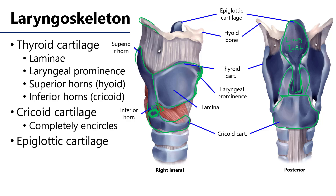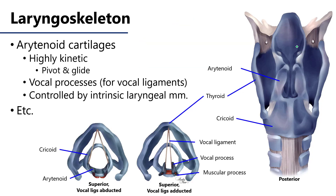The laryngeal inlet is the space into and out of which air flows between the larynx and the laryngopharynx. The arytenoid cartilages are high-value cartilages — they sit atop the cricoid cartilage and control both the laryngeal inlet and what the vocal folds within the larynx are doing. Most of the intrinsic laryngeal musculature controls what these arytenoid cartilages are doing.